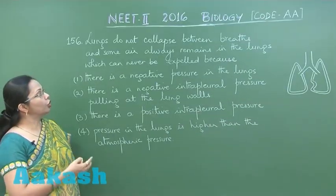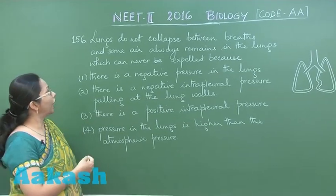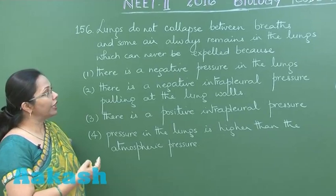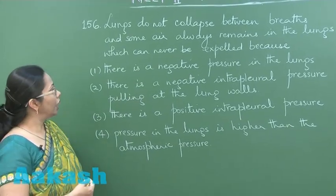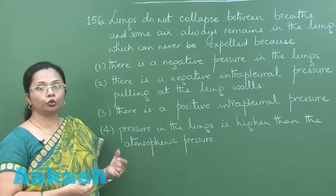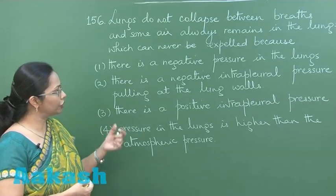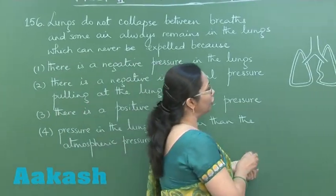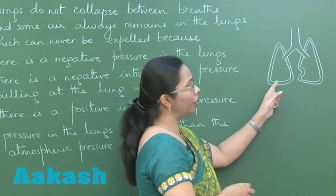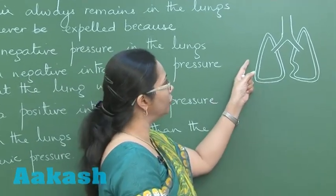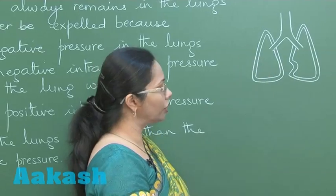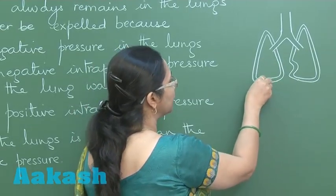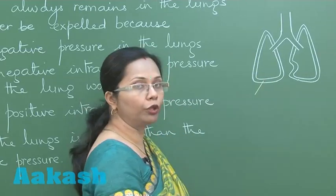Question 156: Lungs do not collapse between breaths and some air always remains in the lungs which can never be expelled. This is related to the intrapleural pressure. Our lungs are surrounded by two pleural membranes — the outer parietal and the inner visceral — with fluid filled in between.